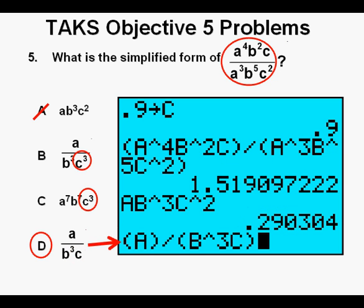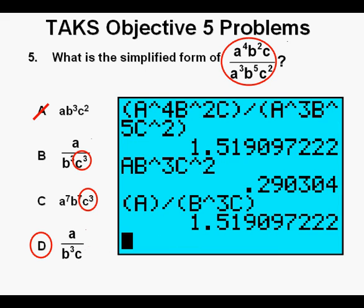Next, we'll enter answer d, a over b cubed c. Press enter. This gives us 1.519, just like our original expression, confirming that d is our correct answer.